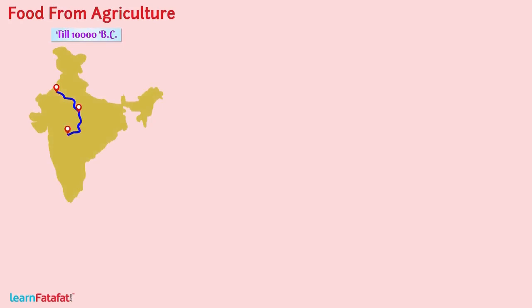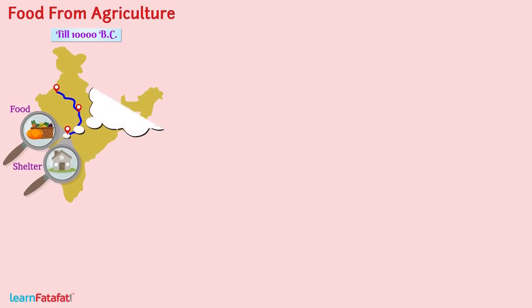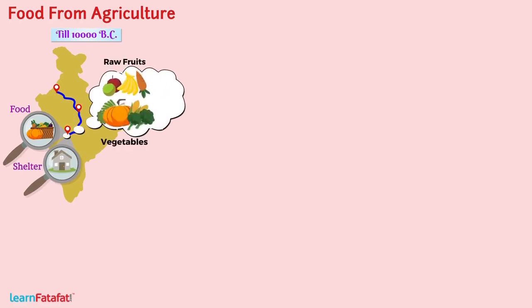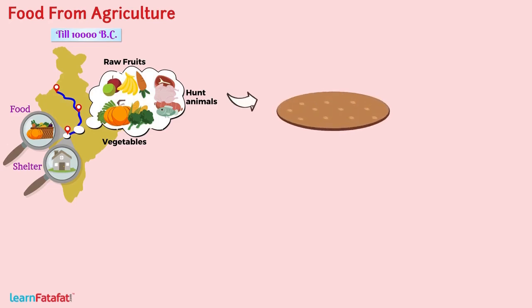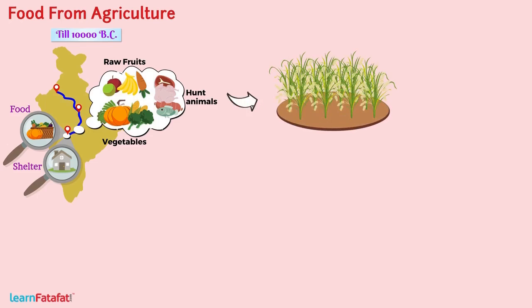Food from Agriculture. Till 10,000 BC, people were travelling in groups from place to place in search of food and shelter. They obtained raw fruits, vegetables, or hunted animals for food. It was very difficult for them to gather food. To solve this problem, they started growing the same type of plant at one place on a large scale. For example, wheat grown and cultivated on a large scale is called a crop.